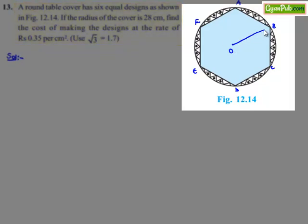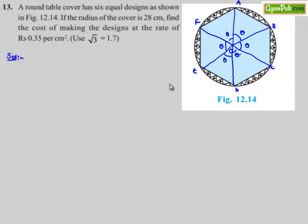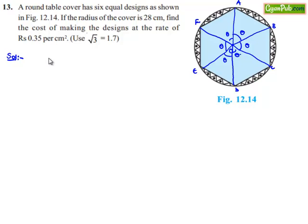Let us join OB, OA, OC, OD, OE, and OF. Each subtends an angle theta at the center as they are similar. Therefore, the angle subtended by each one can be obtained as follows: we know that the total angle subtended at the center of the circle is 360 degrees. So 6 theta equals 360 degrees, which implies theta equals 60 degrees.